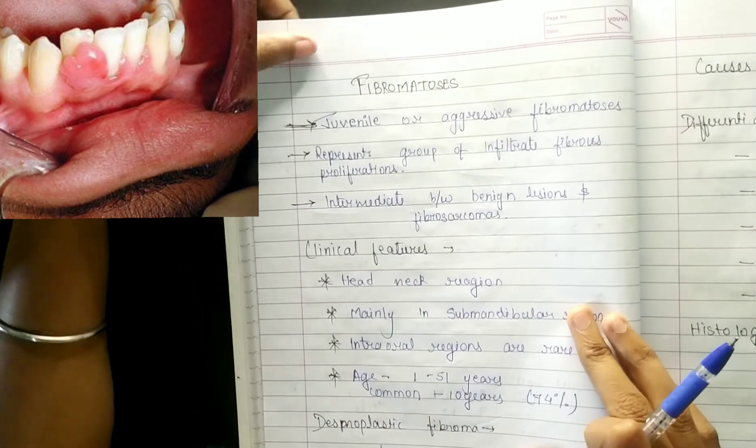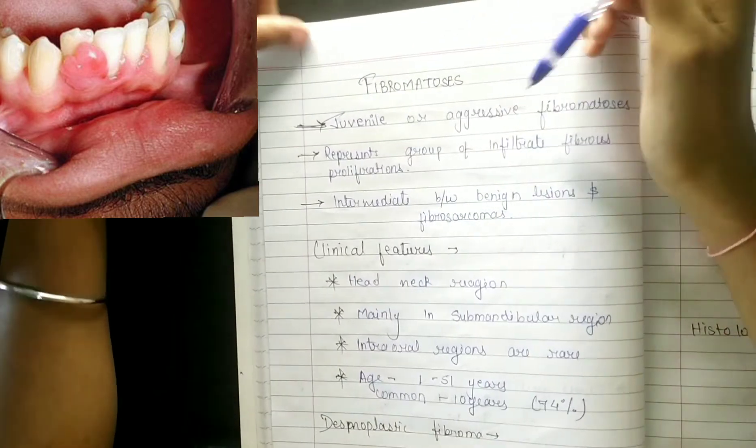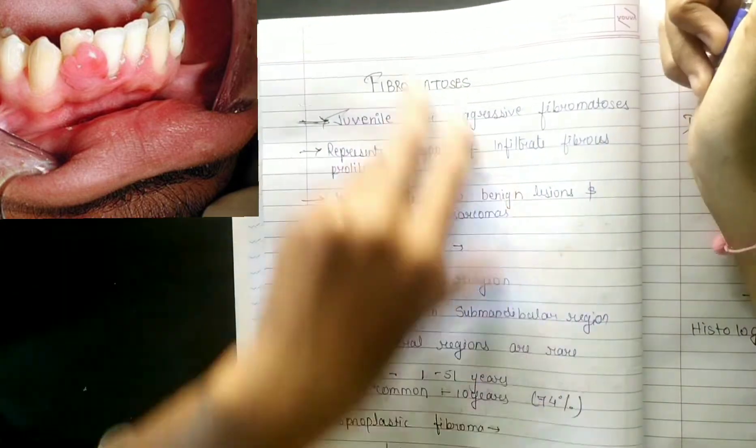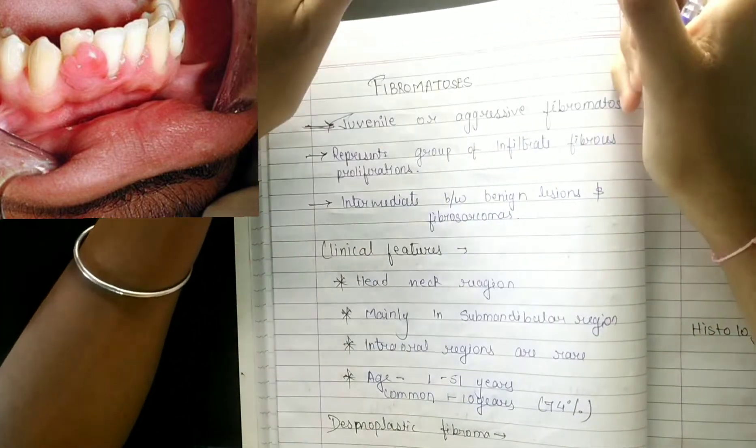Fibromatosis - first of all you have to remember that it is juvenile and it is a very aggressive fibromatosis. Juvenile means that you will see it in children.